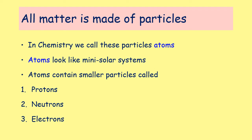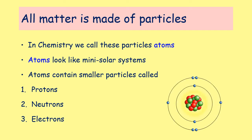As we saw in previous lessons about states of matter, everything is made up of particles. In chemistry we call these particles atoms, and atoms look a bit like mini solar systems. Inside the atom we have smaller particles called protons, neutrons, and electrons.